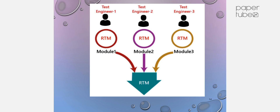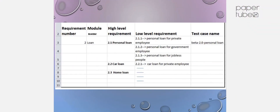The Requirement Traceability Matrix includes backward traceability and forward traceability, serving as an analysis report for engineers. It contains fields such as module name, requirement number, high-level requirements, low-level requirements, and test case name. This is one of the areas which helps you manage and organize requirements effectively.